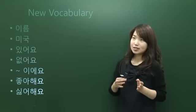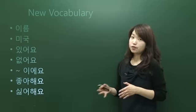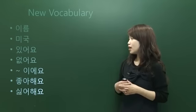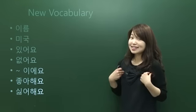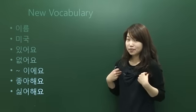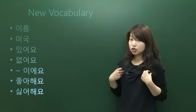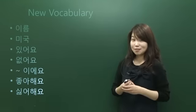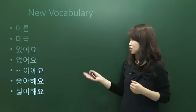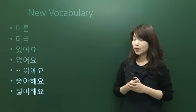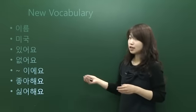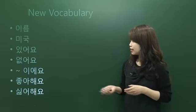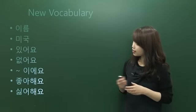이예요 means it's a linking verb. For example, 나는 학생이에요 — I'm a student. 당신은 선생님이에요 — You are a teacher. Right? So it's a linking verb. Let's look at the next one.